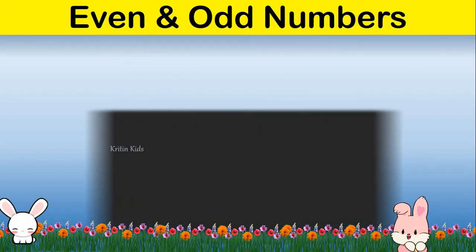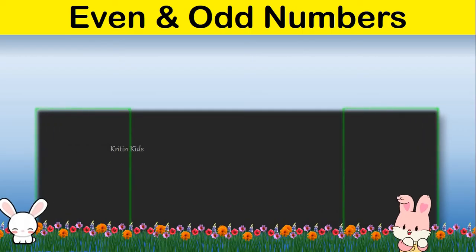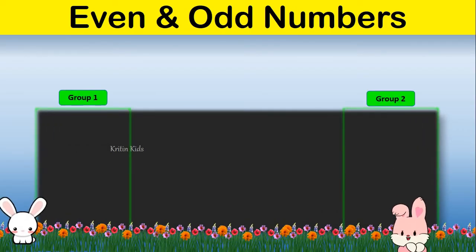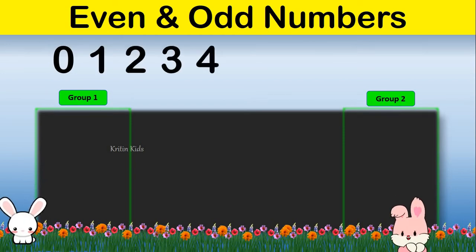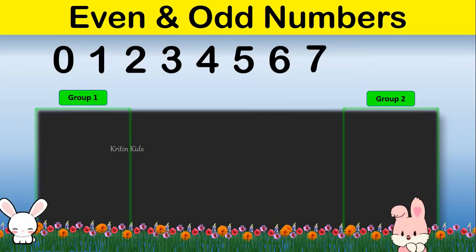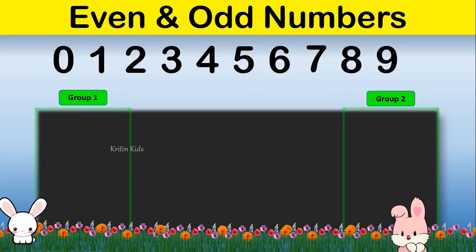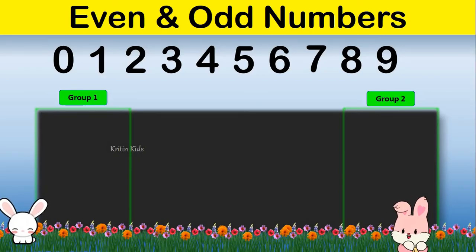First let us write all the single digit numbers: 0, 1, 2, 3, 4, 5, 6, 7, 8, 9. So let's see which of these numbers are even and which numbers are odd.